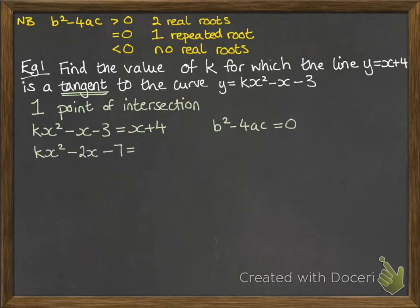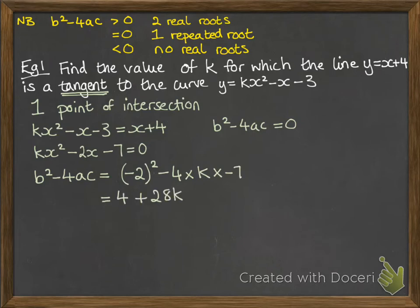So we need to rearrange this into a quadratic equal to zero so we can pick out the discriminant. Now working through the discriminant, we get the following. For it to be a tangent, we need that to be equal to zero, so now we solve it for k, and k has to be minus 1 seventh.